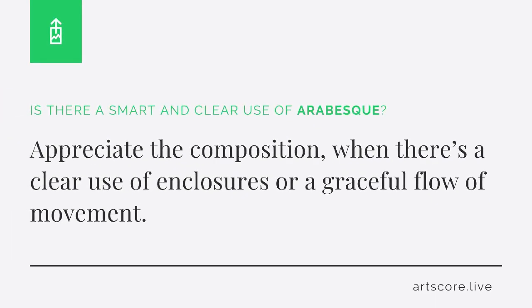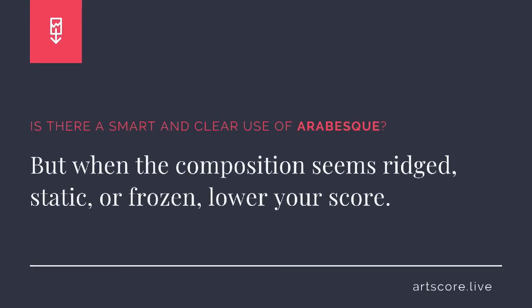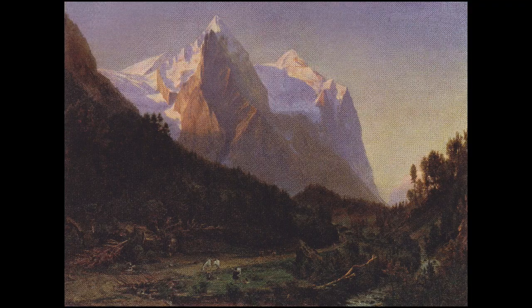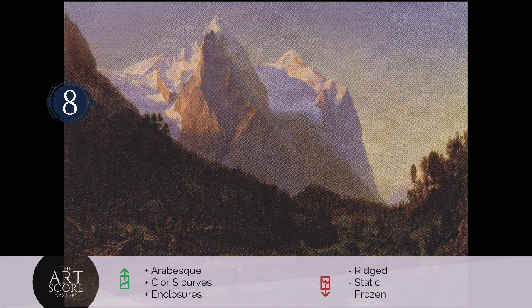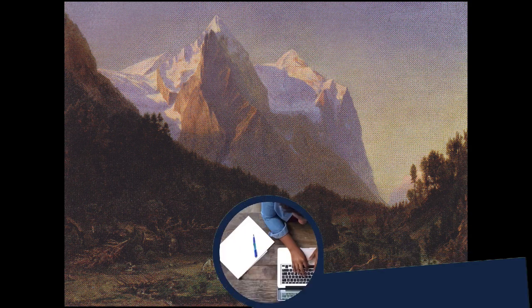Arabesque. Is there a smart and clear use of arabesques? Appreciate the composition when there's a clear use of enclosures or a graceful flow of movement. But when the composition seems rigid, static, or frozen, lower your score. I scored the arrangement an 8. I see C-shaped enclosures within the composition, and there are graceful movements that flow throughout. The movements support the story. What's your score?